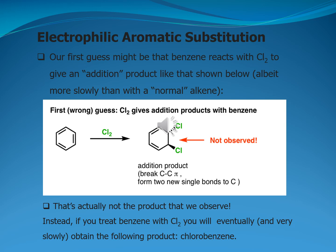Actually, this is our first wrong guess because chlorine giving an addition product here is not what we observe. Instead, if you treat benzene with chlorine, you will eventually obtain chlorobenzene instead of the 1,2-dichlorohexadiene molecule.